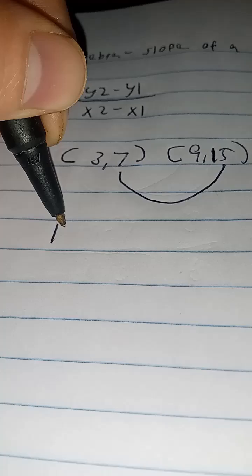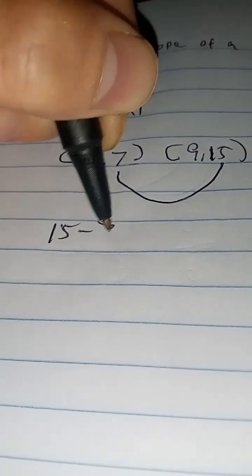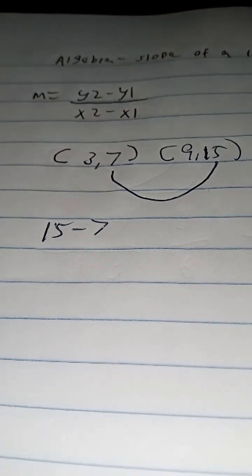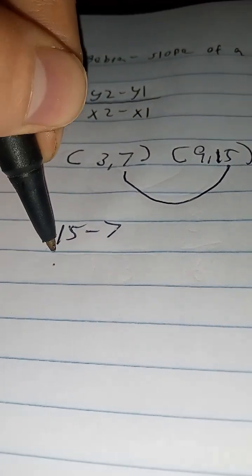The first step is we've got to handle the second number right here. So we're going to do 15 minus 7. Write it out in fraction form just like the formula right here. So y2 minus y1. We're going to put a little thing right there.